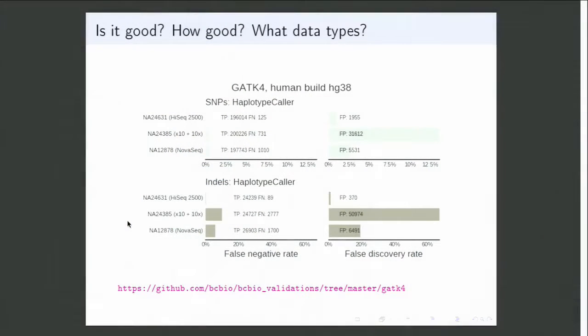I'll have a bunch of plots — on the left side is sensitivity, on the right side is specificity, so you can tell how much you're detecting and how well you're detecting it without noise. There are stratifications by different types of variants, samples, and data types. In this case, you have GATK4 which just came out this year, and if you're working on human build 38, this validation runs across three diverse Genome in a Bottle samples and different data types, giving you confidence that things are working well.